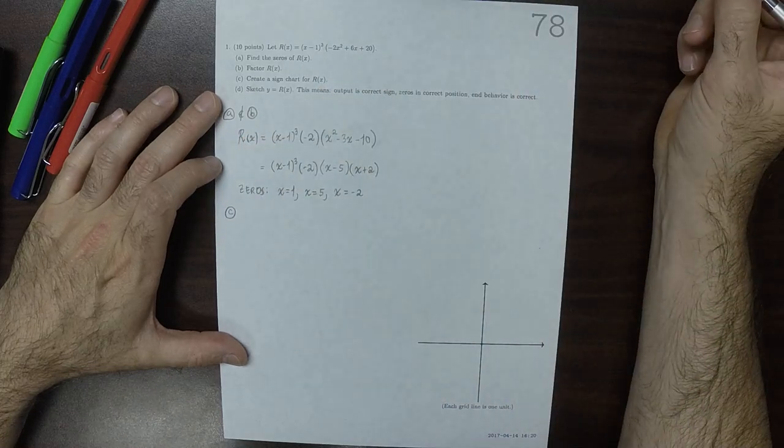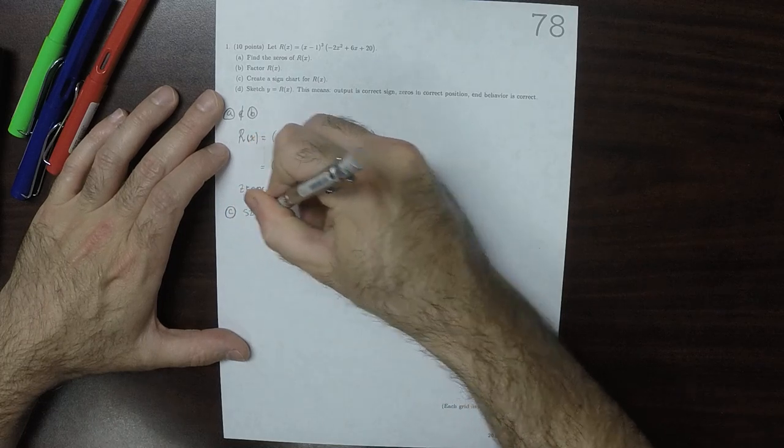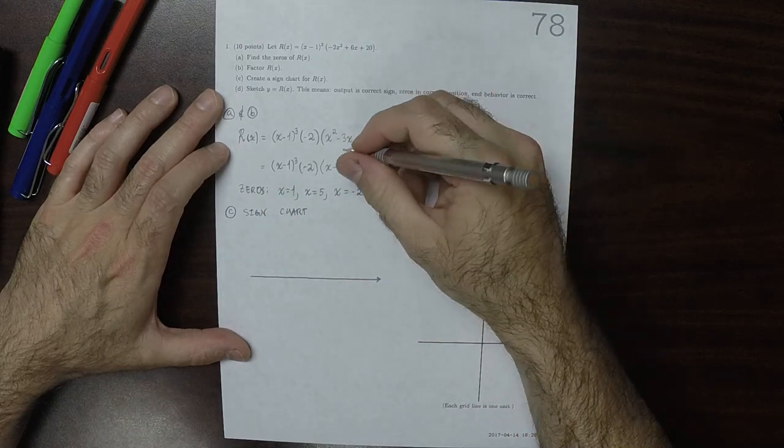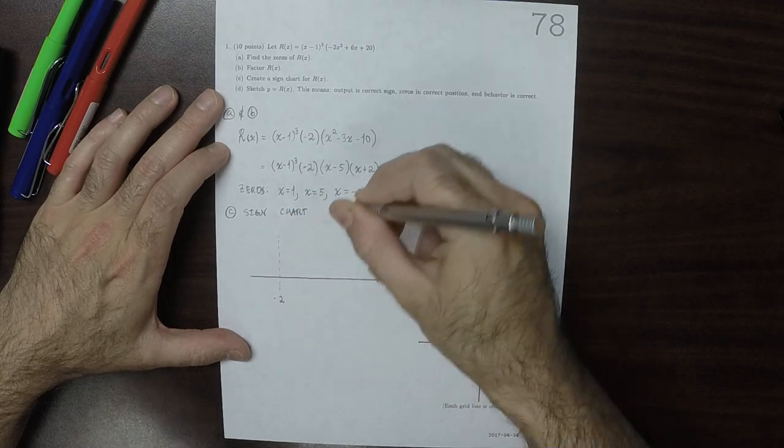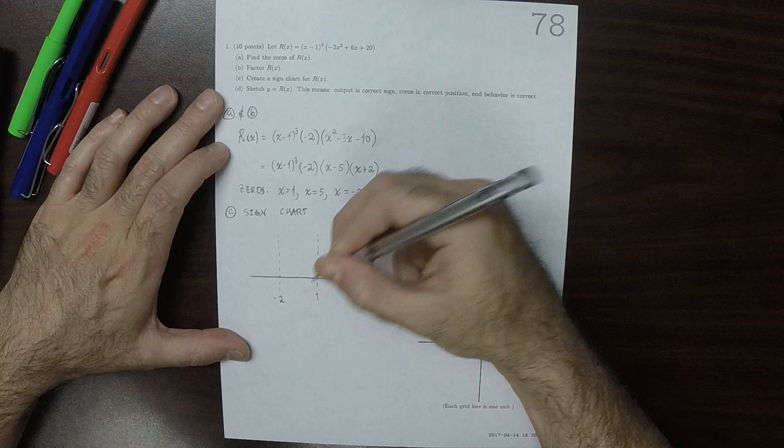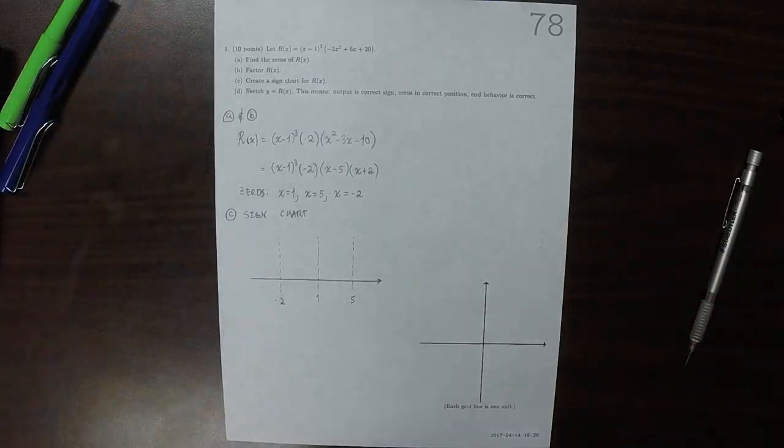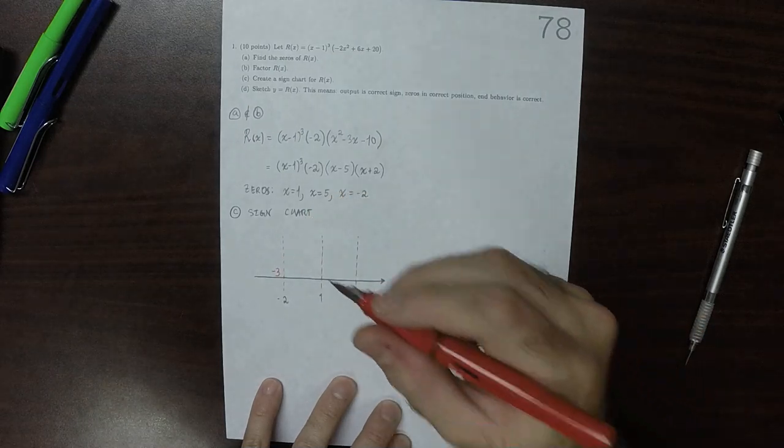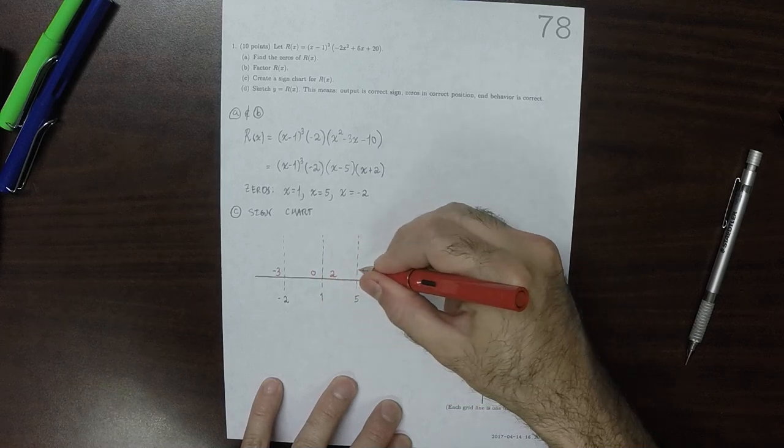OK. See? Make a sign chart? Well. There's 3 fence posts. There's negative 2, there's positive 1, and positive 5. So that would be negative 3 could be a sample point, and how about 0 and 2 and 6.